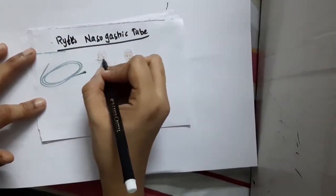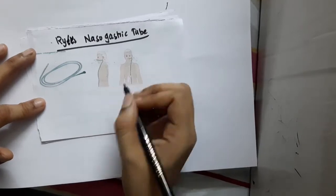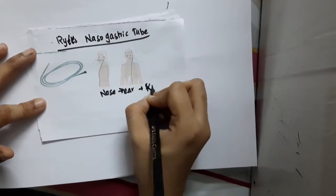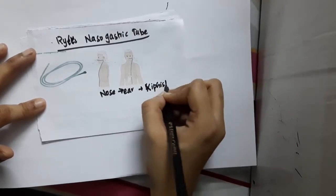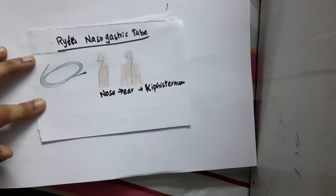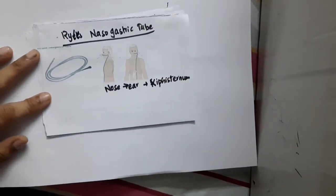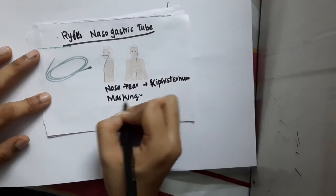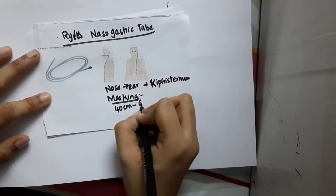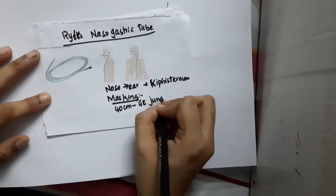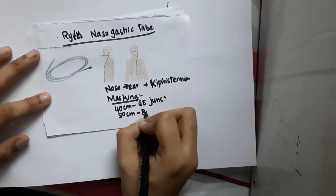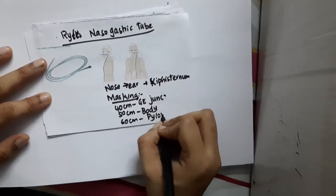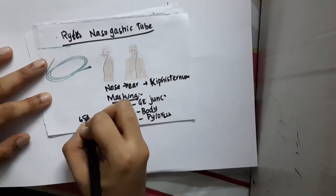The length is measured from nose to ear and ear to xiphisternum. This measured length is inserted. There are markings on the tube: 40 centimeters is the gastroesophageal junction, 50 centimeters is the body of stomach, 60 centimeters is at the pylorus, and 65 centimeters is at the duodenum. These are the gastrointestinal markings.